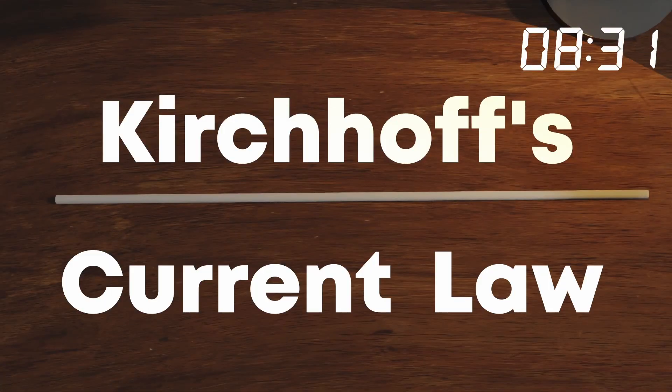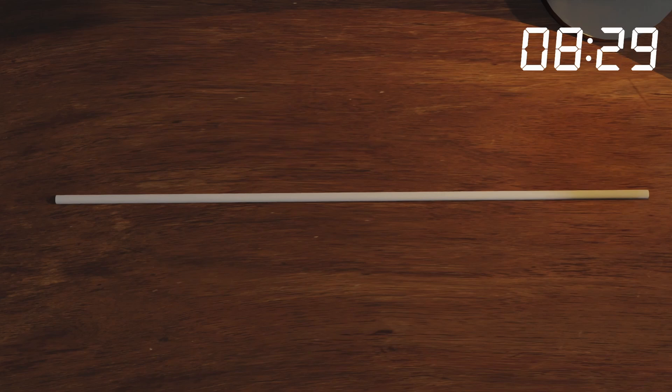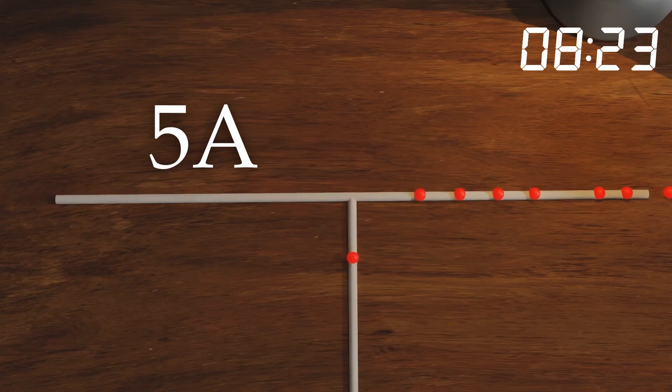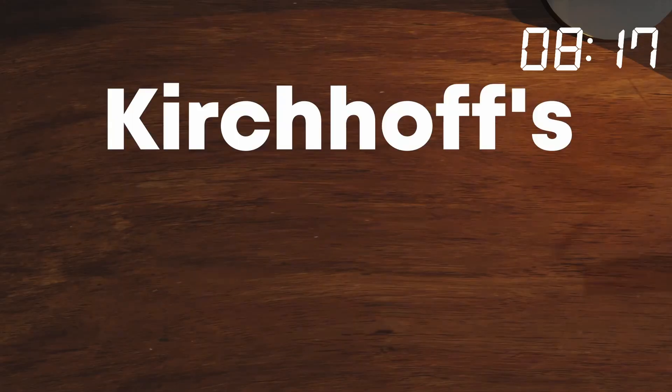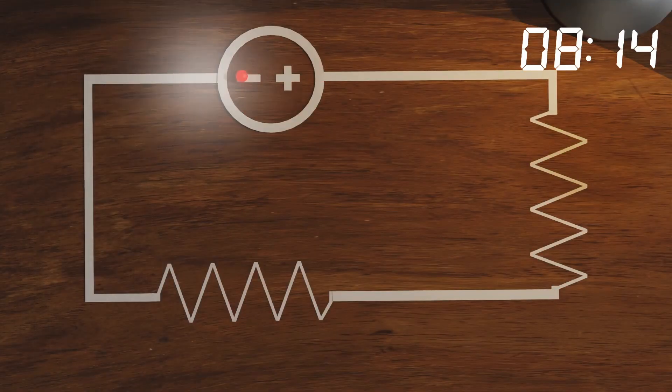To tackle hard circuits, we'll need a new law: Kirchhoff's current law. It's pretty easy, actually. It tells you that the current that goes in must also come out. So if this wire has 5 amperes and this one has 4 amperes, then you know that this one must have 1 ampere.